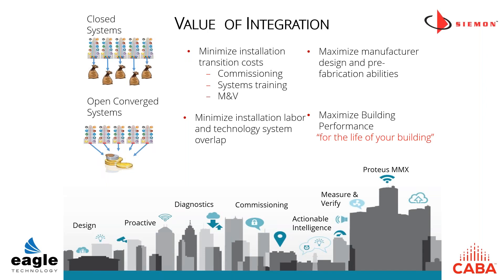To sum it up: when we have closed systems without the integrated building, it costs more — more to procure, more to deploy, and more to operate. Having open systems gives us incredible day-one savings as well as ongoing savings. We can minimize installation costs; commissioning is much quicker, and we can even do constant commissioning. Measurements and verifications to confirm savings are much easier and more accurate. Lower labor costs, less overlap in the trades. We can also maximize manufacturer design through prefabrication capabilities. The bottom line is we're maximizing your building performance for the total cost of ownership — right through construction and through the operations phase.